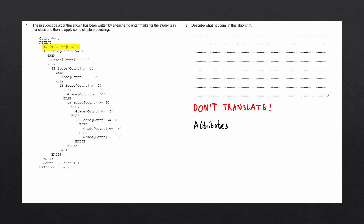Let's write down some attributes of the pseudocode to keep track of them. The first thing we have is an array called score. We're also accessing an array called grade using the same square bracket formatting. We also have a repeat-until loop with an exit condition using a variable called count. Count is initialized to zero at the beginning and incremented by one on each iteration, meaning this loop runs 30 times, terminating when count reaches 30.